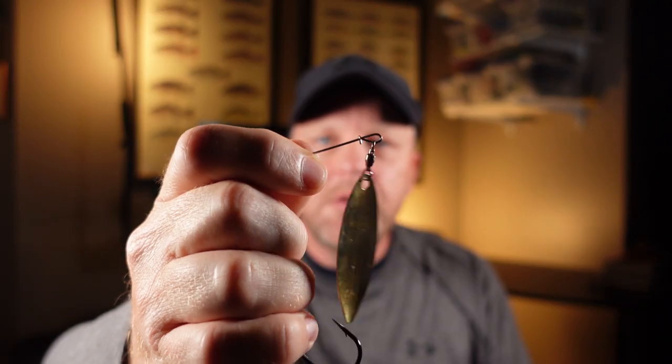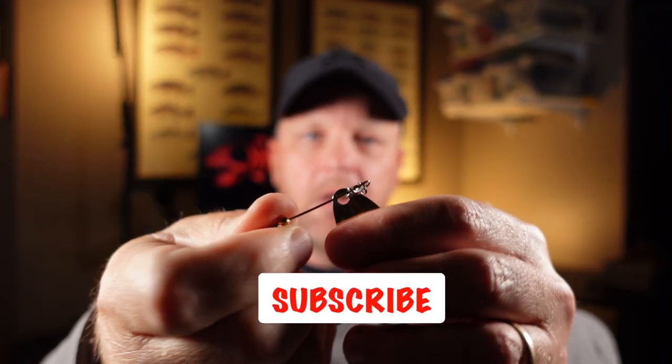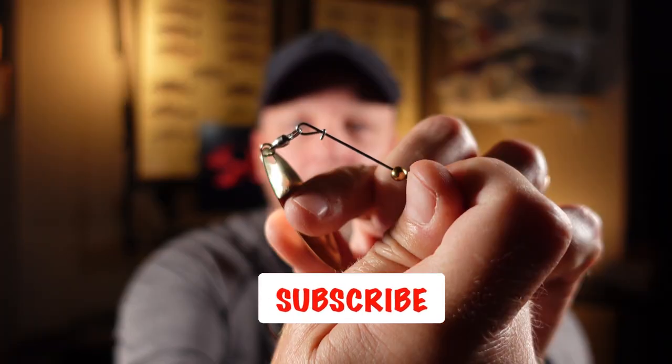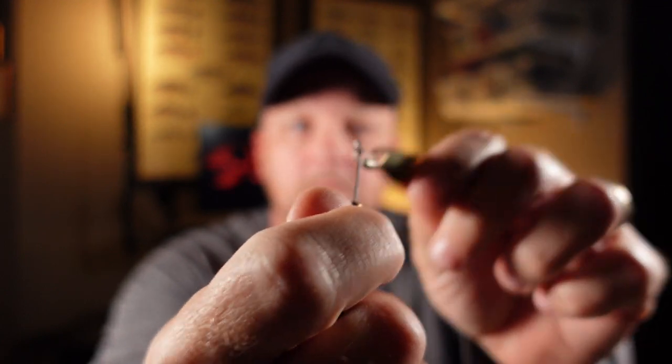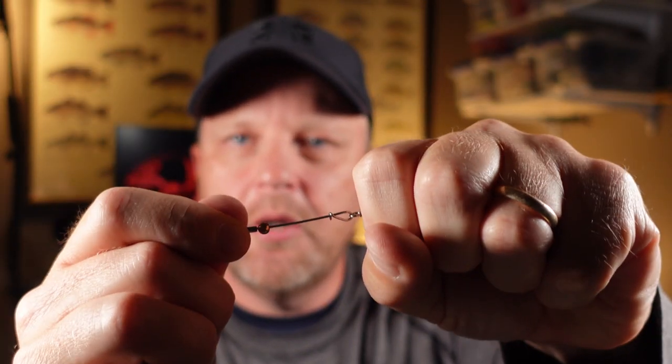But I've had that thing come undone and I've lost spinnerbaits over the years with that. I started making this little lock on this spinnerbait and there's no way with that little loop on there that that thing is going to come loose. And I've had fish come up and grab that blade and yank on it, and they'll sometimes just yank that thing off.